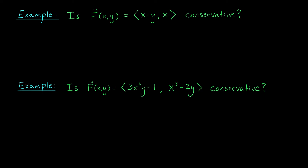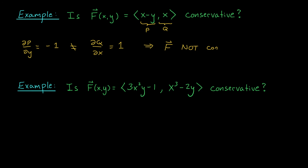Let's wrap up with two examples. In the first example, we have the vector field F(x,y) = (x − y, x). To check if it's conservative, we look at ∂P/∂y and ∂Q/∂x. We find ∂P/∂y = −1 and ∂Q/∂x = 1. They're different, so the component test says this vector field is not conservative. This is the same vector field from the last video, where we proved it wasn't conservative by finding two paths with different line integral values — but now we have a much shorter argument.